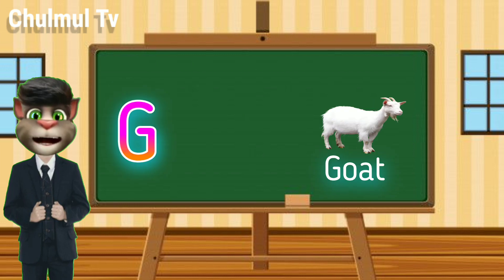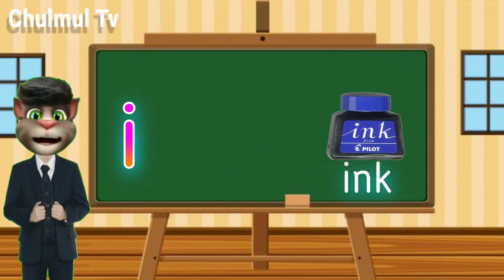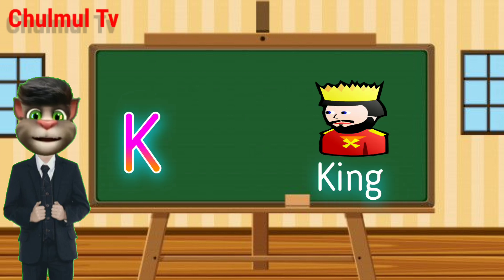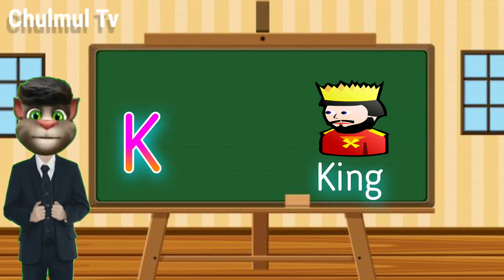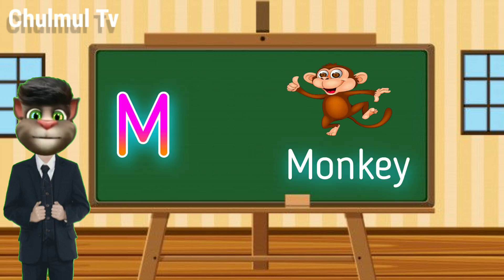G for goat, H for hen, I for igloo, J for jag, K for king, L for lion, M for monkey.